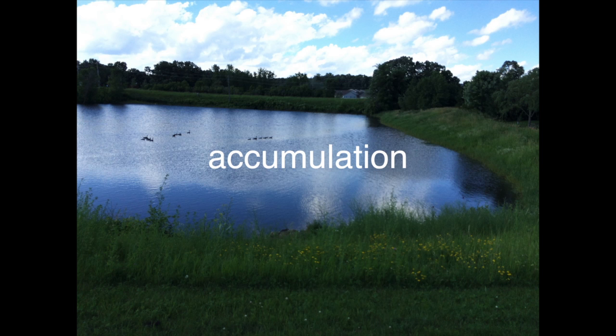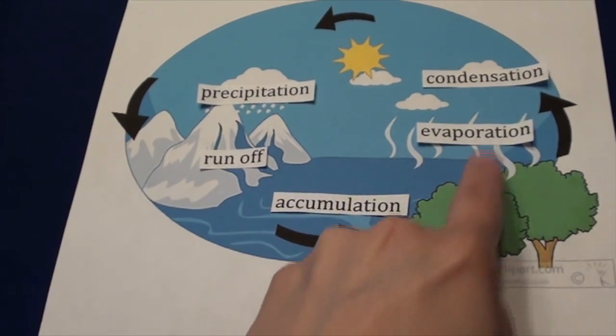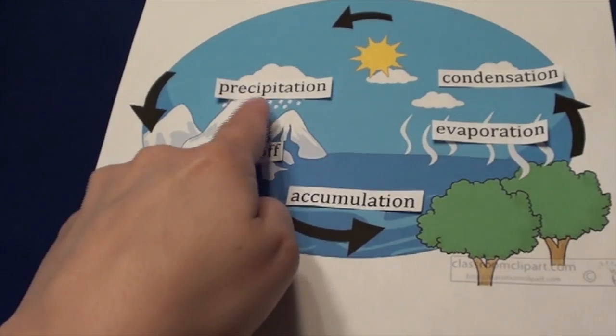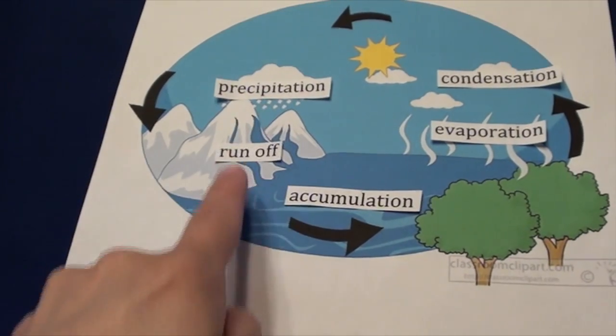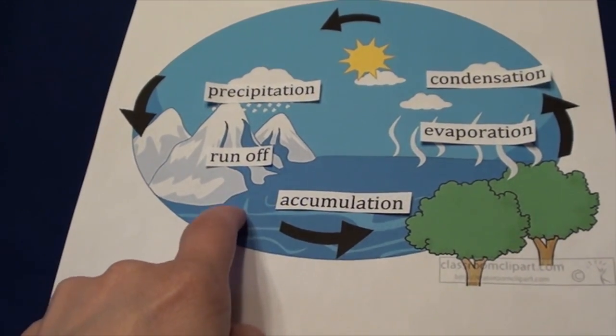Let's review the main phases and components of the water cycle: accumulation, evaporation, condensation, precipitation, and runoff.